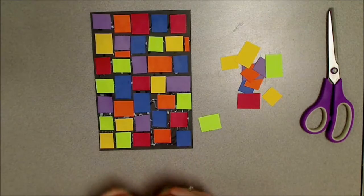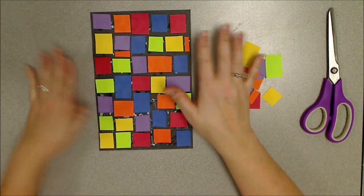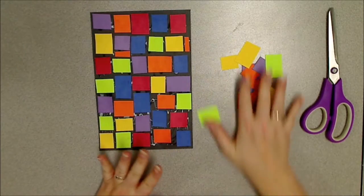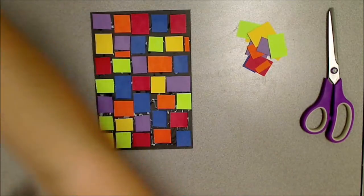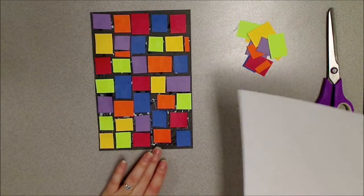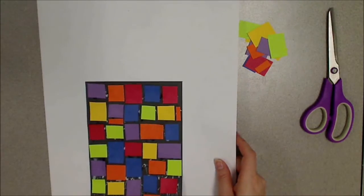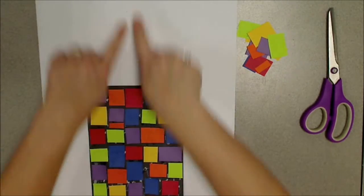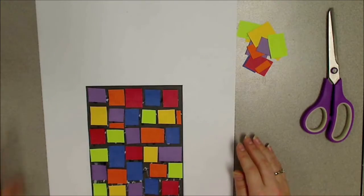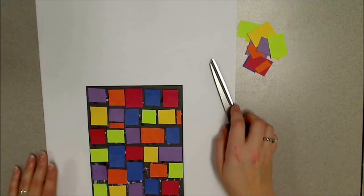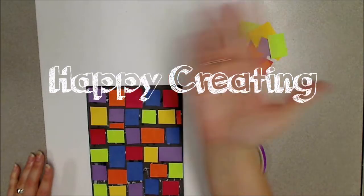This is all we're gonna do today. Remember to save this, this is our vase. We're gonna be putting it on a big piece of paper next time. Next time I'm gonna show you guys how to draw different kinds of flowers and then we will color it. All right guys, happy creating.